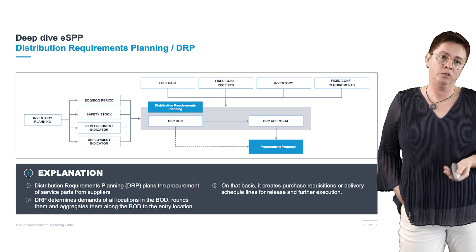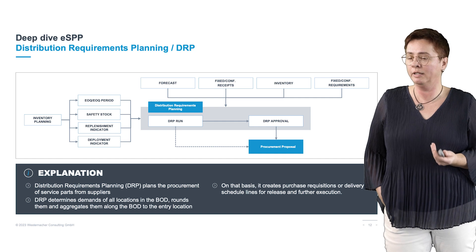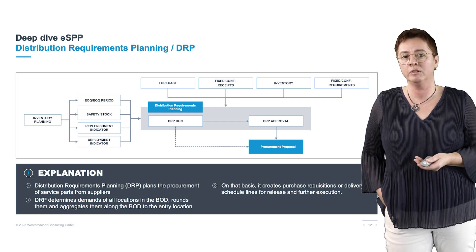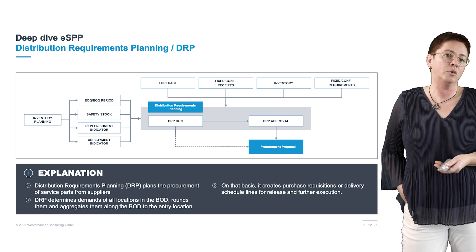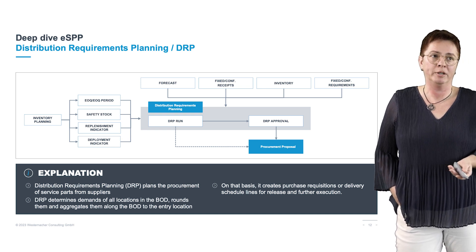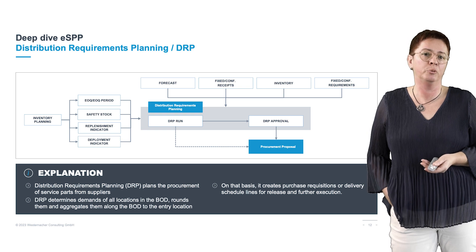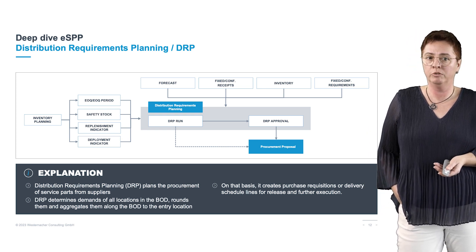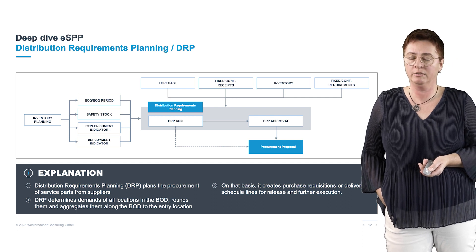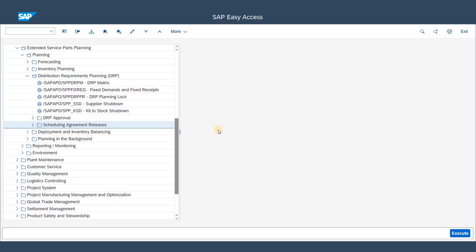ESPP can work with scheduling agreements, so it creates delivery schedule lines, or it can also work with discrete orders, meaning it creates purchase requisitions that are then transformed into purchase orders. An integrated approval is also available on different levels. Now I want to demonstrate how ESPP determines net requirements and shifts them starting at the lowest level of the BOD through the network to the entry location, so we know at the end what we need to procure from the supplier.